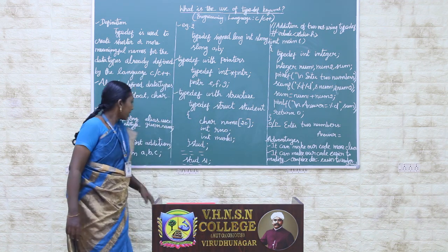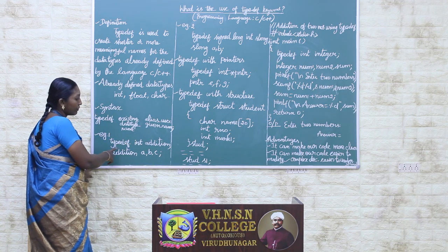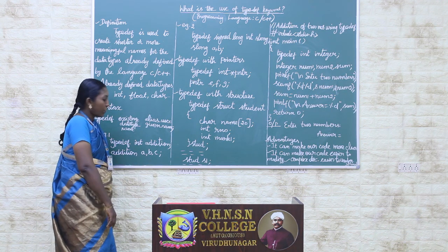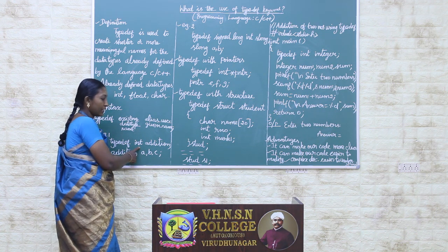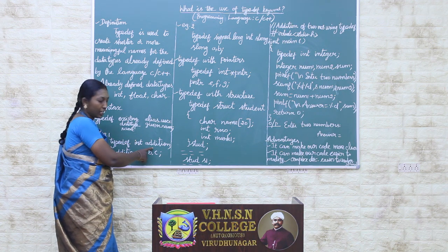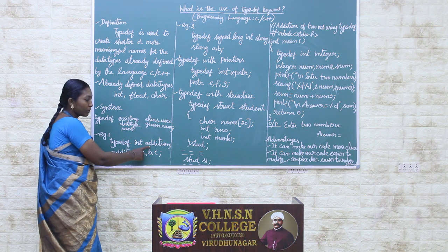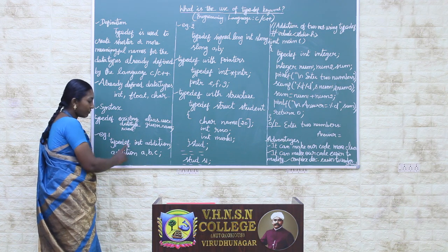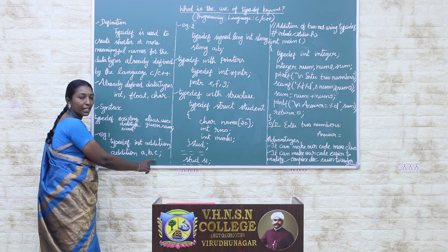Let's see Example 1. Here, the reserved keyword is typedef. We used to have integer type variables A, B, C. But now I want to give some alternate name for this int data type — that is, 'addition'. So we write: typedef int addition. We are giving the alternate name 'addition' for the int data type. Afterwards, we can use 'addition' to declare the variables A, B, and C.